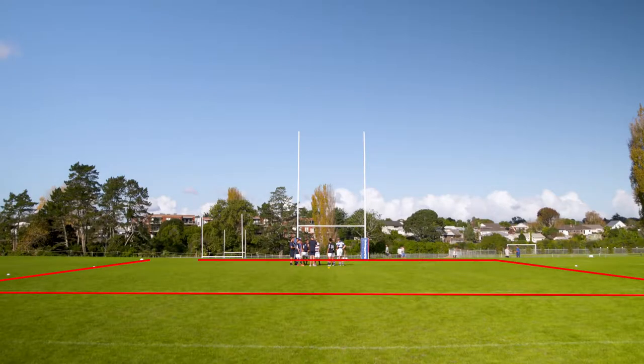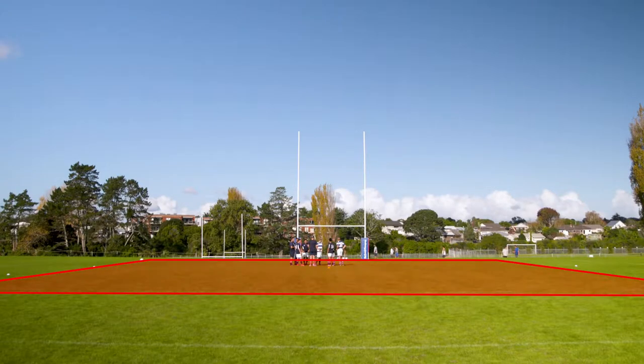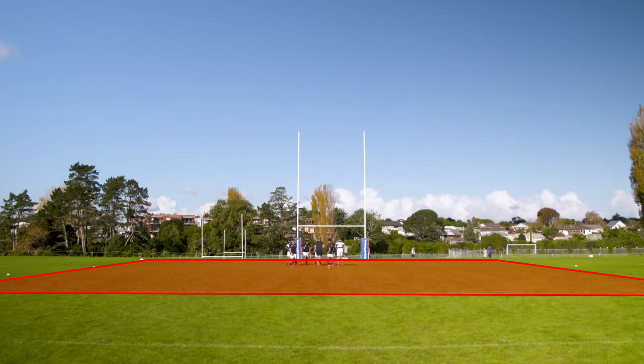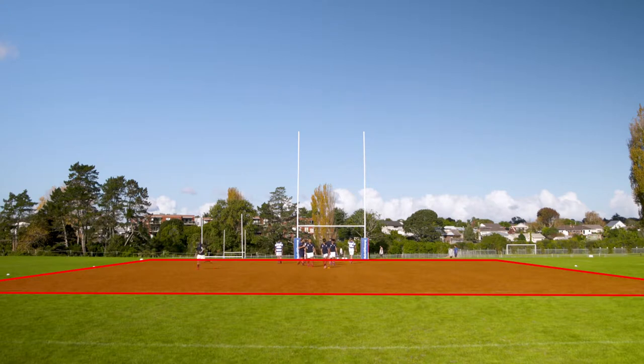Start by marking out the space available for the players. A length of halfway to try line and width of between the 15s can work quite well, but adjust as you see fit.